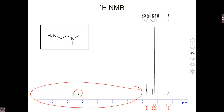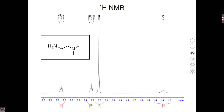So we take that and say: okay, there's nothing interesting above three, so let's zoom in from zero to three so we can see the splitting better. It's the same spectrum. And once again, down here we have a small wide peak with no splitting. That's our nitrogen — just like we saw before.